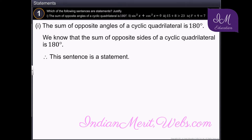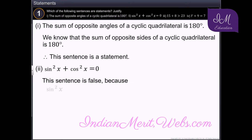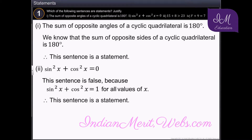The next sentence is: sine squared x plus cos squared x is equal to zero. The sum of sine squared x and cos squared x is 1 for all values of x. Hence, this sentence is false. Therefore, it is a statement.